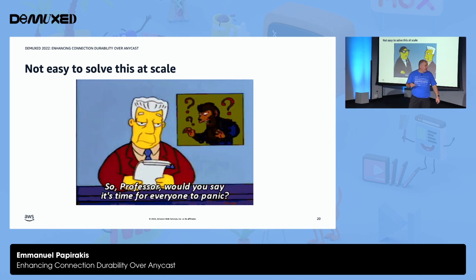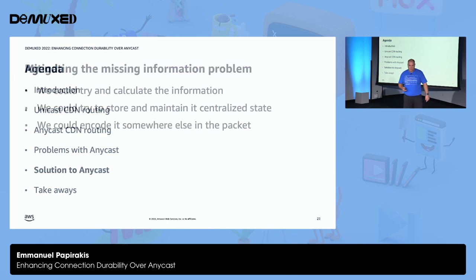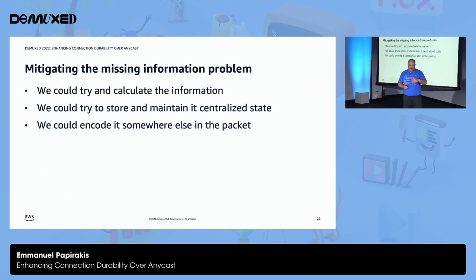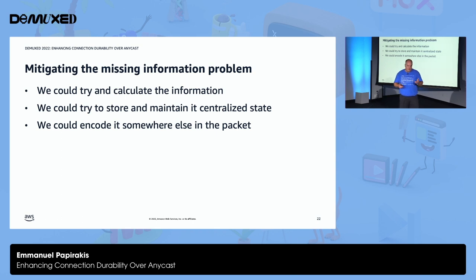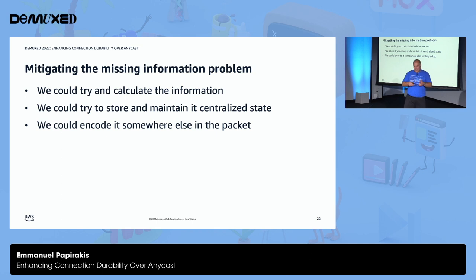It's really hard to solve at scale, but we do have solutions. There are three main categories. First, you do a computation — you look at the packet, do a computation, and try to consistently route the connection to a consistent host. Second, you can try to centralize ownership and store the data somewhere else. Third, you can encode it inside the packet itself — though the packet already has fields in use, which leads to debates about putting info in the timestamp or sequence number, and there are issues with that approach.